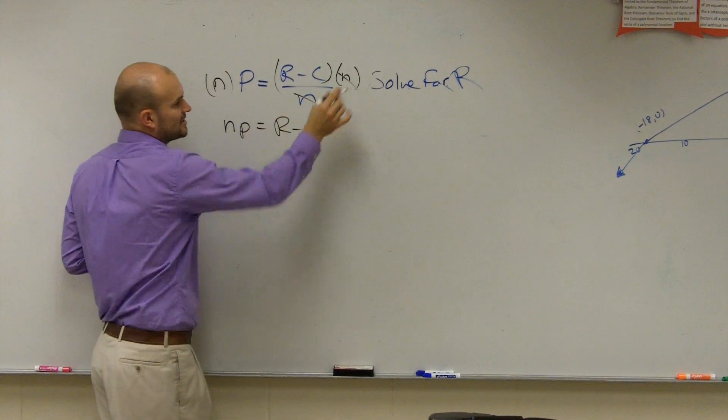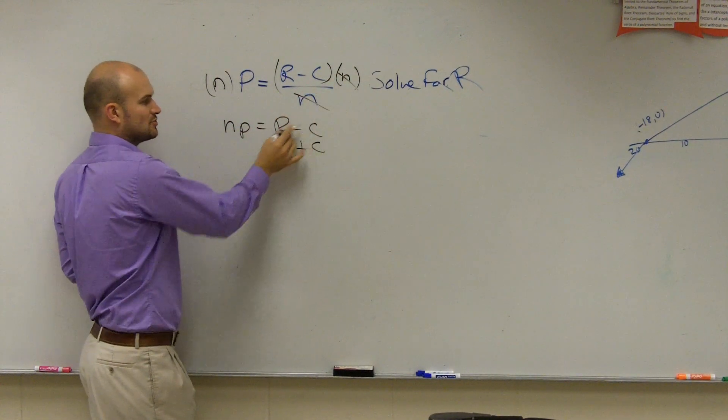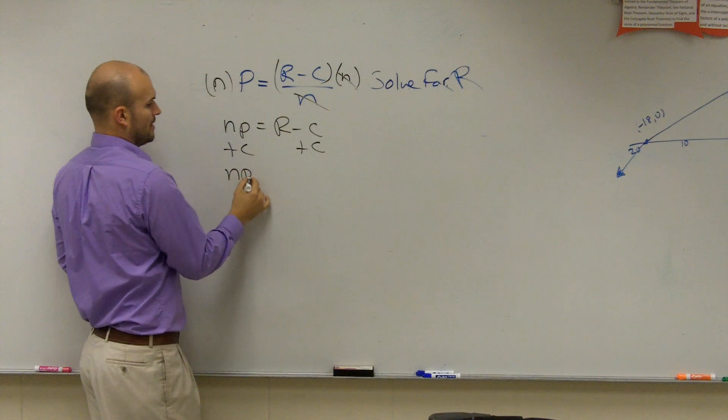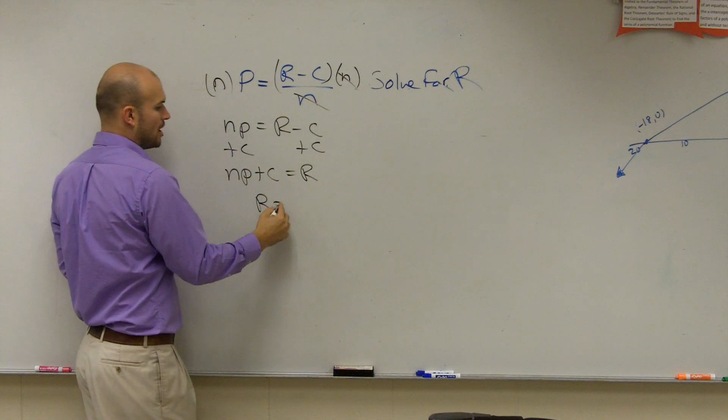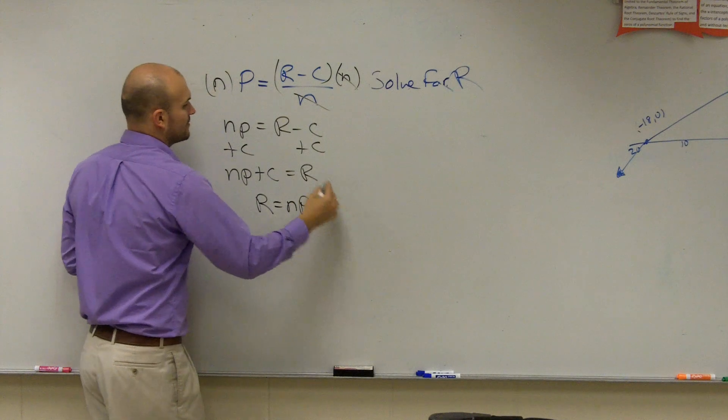np equals r minus c. We'll solve for r. Undo subtraction by c. np plus c equals r. Reflexive property, r equals np plus c. There you go. Done.